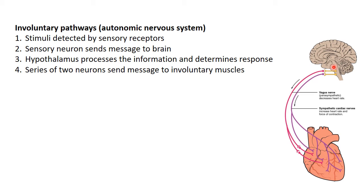The hypothalamus gets information from lots of different places — eyes, taste, touch, and all sorts of sensory inputs. If it senses any danger or stress, the sympathetic nervous system kicks in and our heart rate goes up. The hypothalamus sends a message down through two different neurons. Looking at this purple nerve here — the sympathetic nervous system carries the message down, increasing our heart rate and the pressure when it contracts, to really pump blood around our body to get away from whatever has given us a fright.